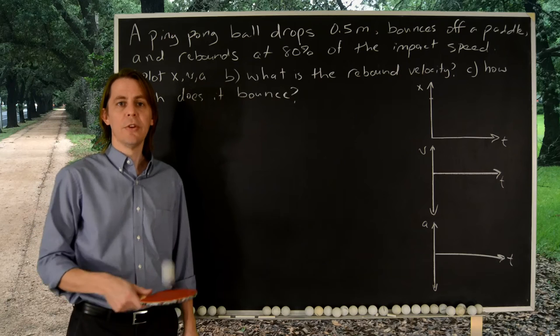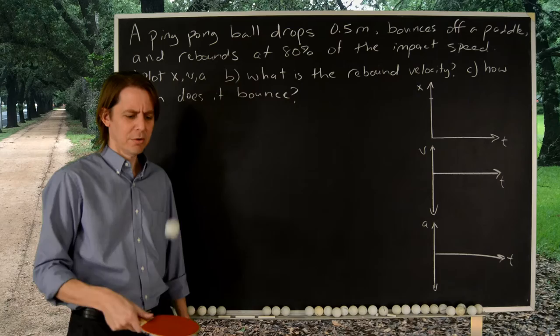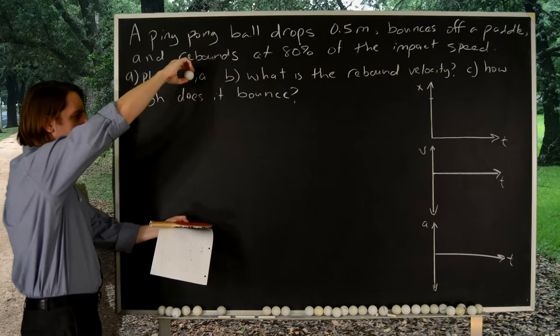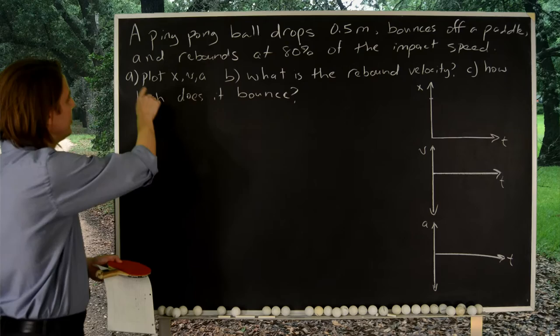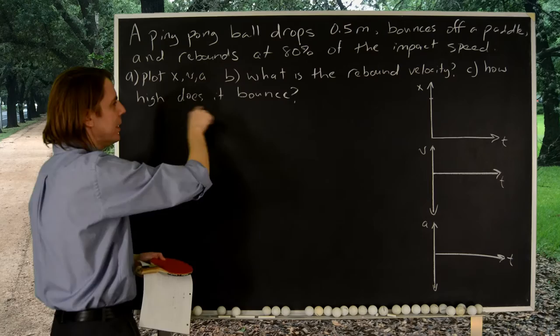This next problem is about a ping pong ball drop. I spent way too much of my youth doing this instead of talking to other people. In this problem, the ball is going to fall about half a meter and bounce off the paddle. Something like that. And we're claiming that the ball will rebound at about 80% of the speed at which it hit the paddle. And the question is simply plot position, velocity, acceleration, calculate the rebound velocity, and figure out how high it'll bounce.